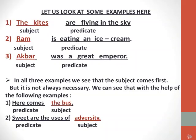Let us make the concept clearer with some examples. Number 1: 'The kites are flying in the sky.' We ask: what is the sentence about? It is about the kites. So 'the kites' is the subject. The verb is in the -ing form — flying. 'Are flying in the sky' is the predicate.